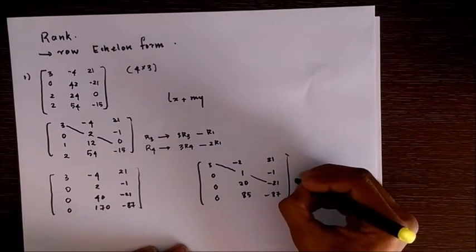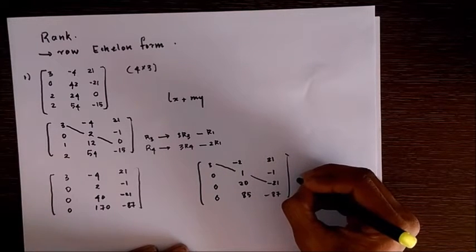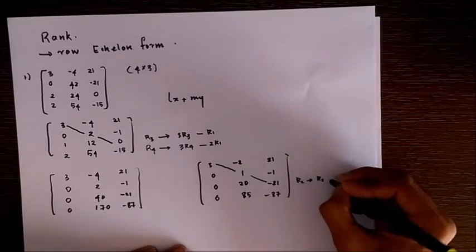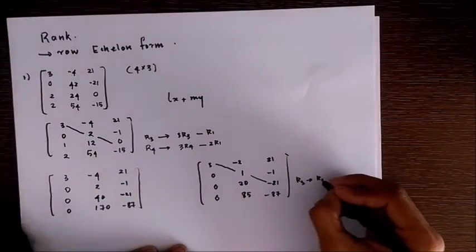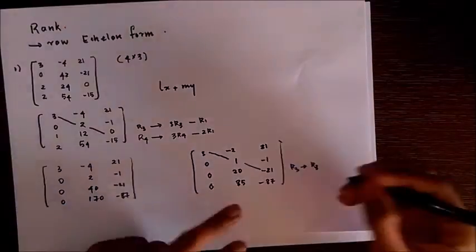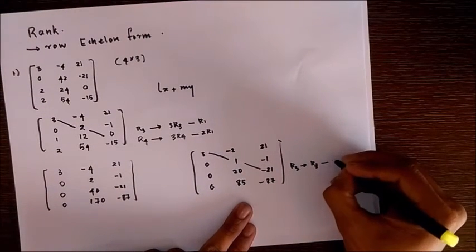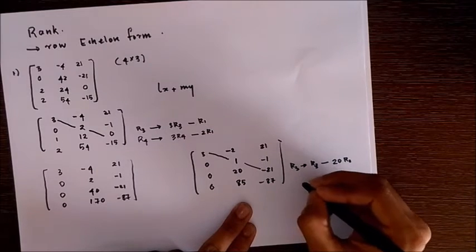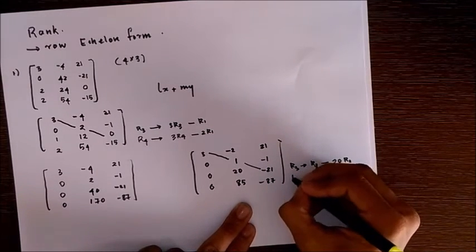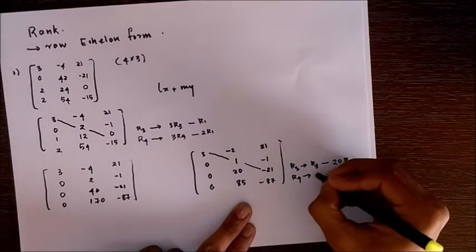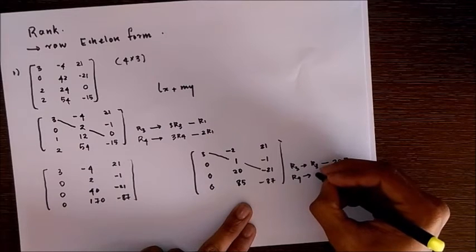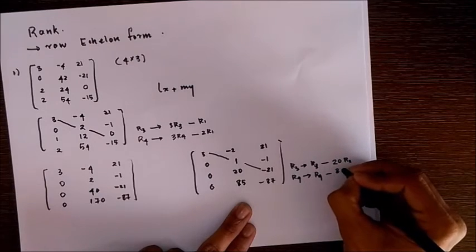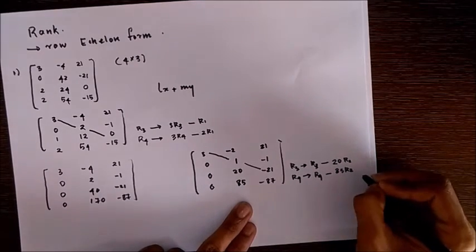So we apply transformations: r3 is r3 minus 20r2, and r4 is given by r4 minus 85r2.